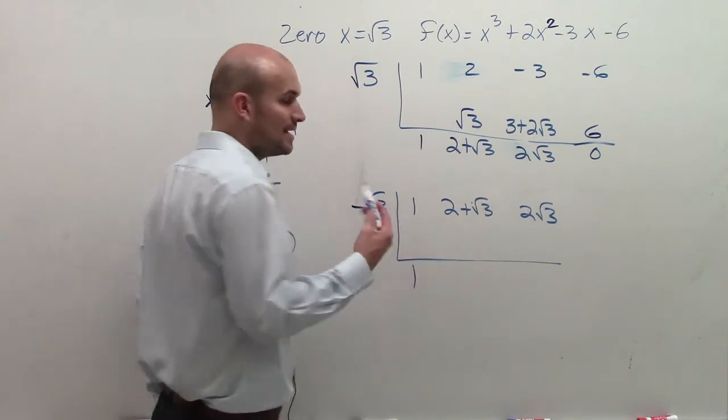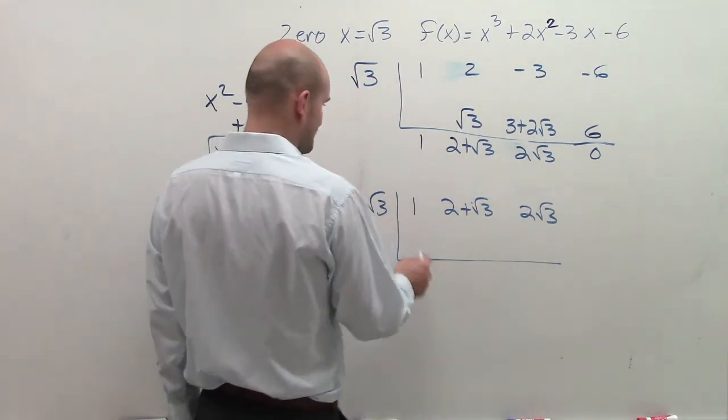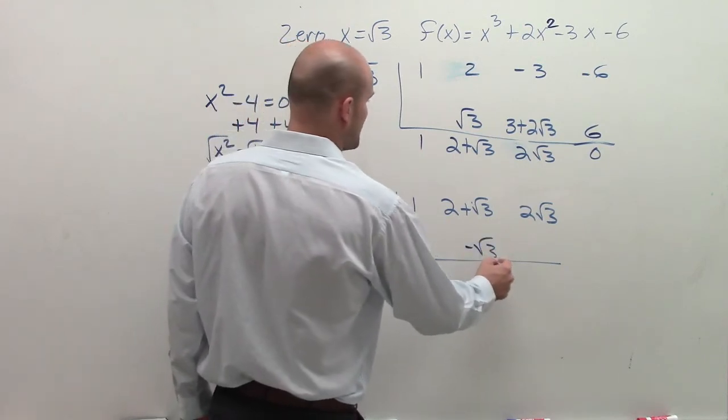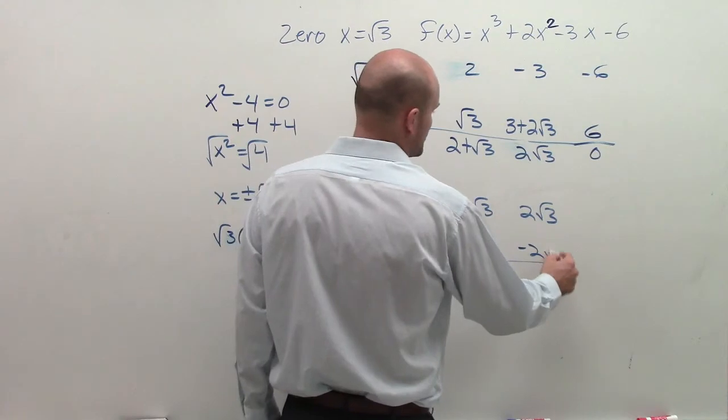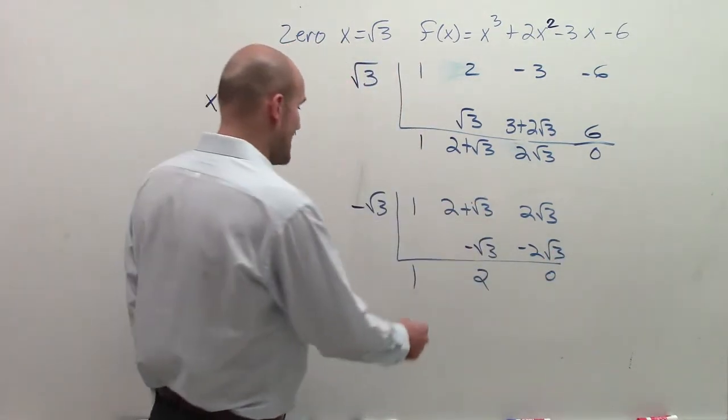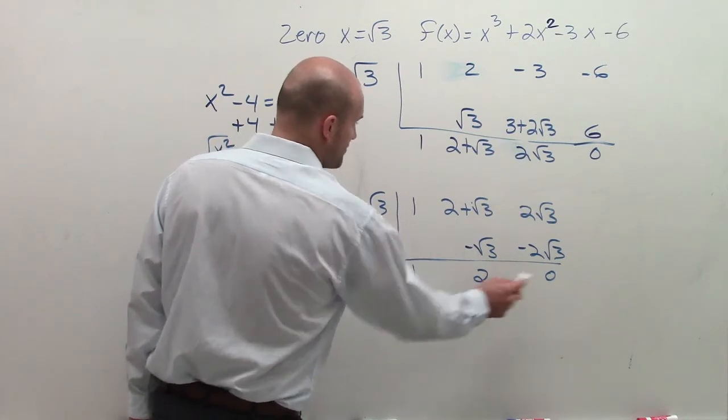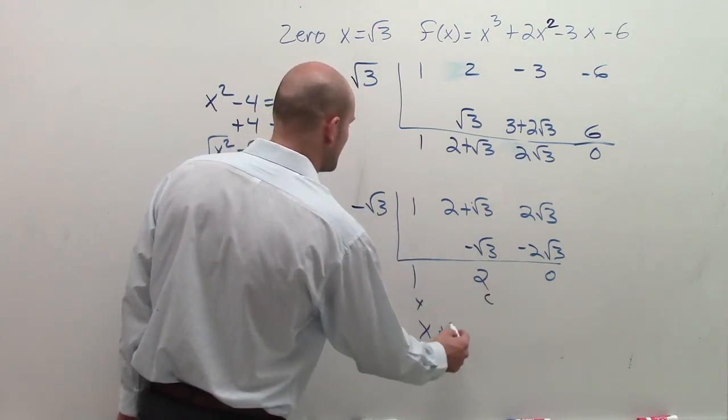So then by doing that, I'm going to get down to my linear factors. 1 times negative square root of 3 is just going to give me a negative square root of 3, which leaves me just with a 2, which then leaves me with a 2 radical 3, which leaves me with 0. This provides me with my other factor, which is going to be, remember, that's your remainder, constant, and linear. So that leaves me with x plus 2.